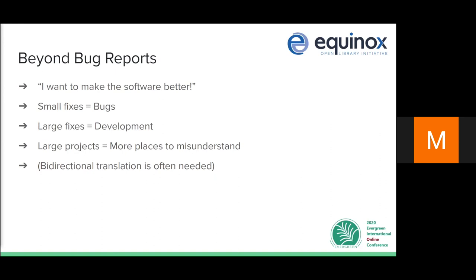Fitting new development into a mature software product like Evergreen can be quite tricky. There are a lot of potential pitfalls, permutations, and no one person knows everything about Evergreen — not even Galen. Larger development means more decisions and more avenues for misunderstanding. So how do we navigate and mitigate this misunderstanding?